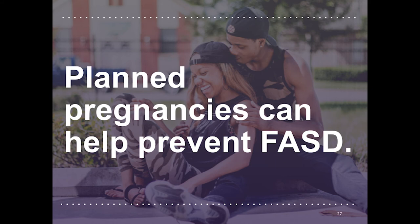Whether you want to become pregnant in the near future or not, it is important to talk with your healthcare provider about family planning options. One of the most critical times to prevent any issues in your pregnancy is before you even become pregnant. If you do want to become pregnant, there are steps you can take to prepare for a healthy pregnancy, such as talking with your healthcare provider, not using alcohol, tobacco, or other drugs, and trying to follow a healthy lifestyle by eating nutritious foods, exercising appropriately, and getting 7-8 hours of sleep each night. You can also talk with your healthcare provider for more information about resources in your community that provide support for alcohol-free pregnancies, such as support groups or recovery services.